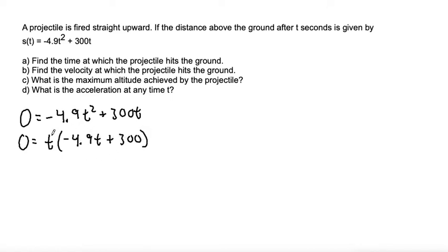Now that we have it in factors, we can set each one of our factors equal to 0 separately. So we have one that is t equals 0, but that would be the time when the projectile is fired straight upward. So that one's not when the projectile hits the ground again.